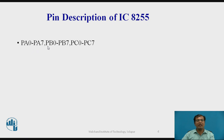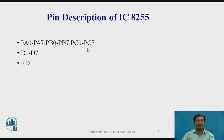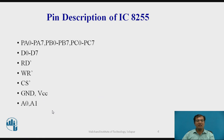It has 3 ports: port A, port B, and port C. The respective pins are PA0 to PA7 for port A, PB0 to PB7 for port B, and PC0 to PC7 for port C. It has data bits D0 to D7. It has an active-low read pin as well as a write pin for reading and writing purpose. There is an active-low chip-select pin to select the 8255. For power supply, VCC and ground. It has pins A0 and A1, which are used for selection of ports, and a reset pin.